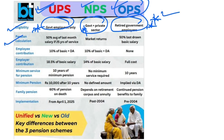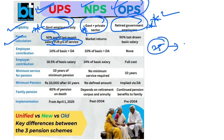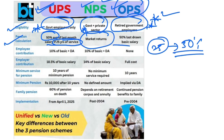Pension calculation: the Unified Pension Scheme provides 50% of the average last month's salary for 25 years of service. So if a government employee has 25 years of service, they receive 50% of their last drawn salary as pension. The National Pension Scheme is market-based — there is no assured pension. If the market grows, the pension will be more; if the market is low, the pension will be less.